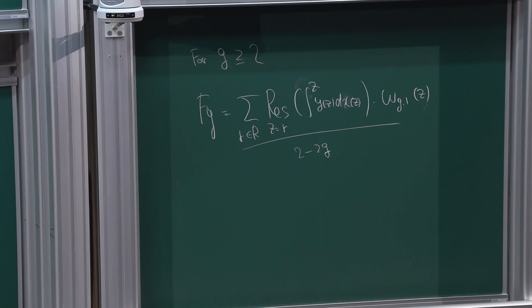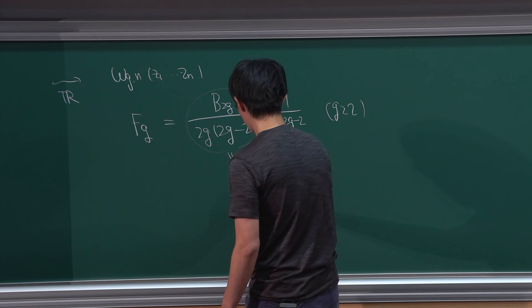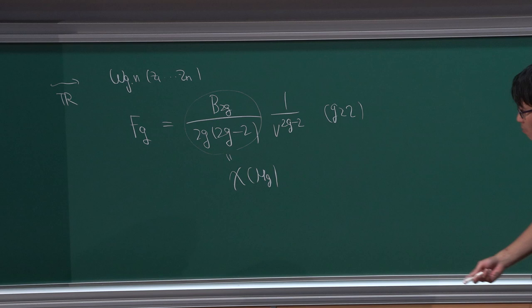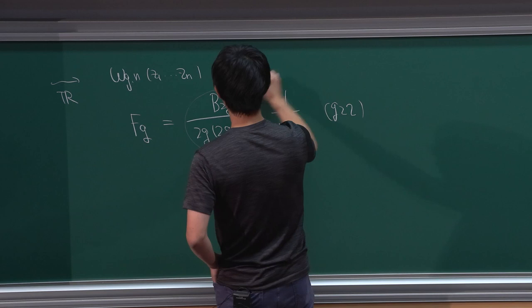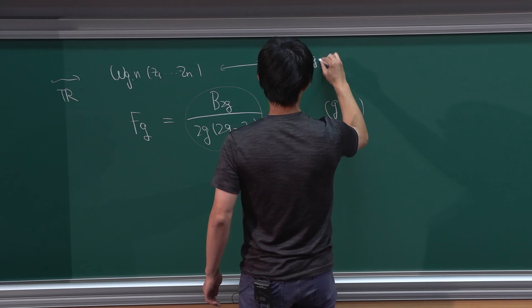After computation, you have an explicit expression. This part is known as the Euler characteristic of the moduli space of genus-g Riemann surfaces by Harer-Zagier's formula. It is also related to the moduli space of n-pointed genus-g Riemann surfaces.